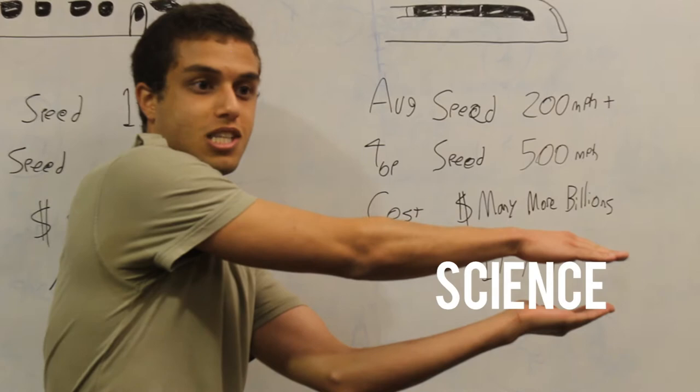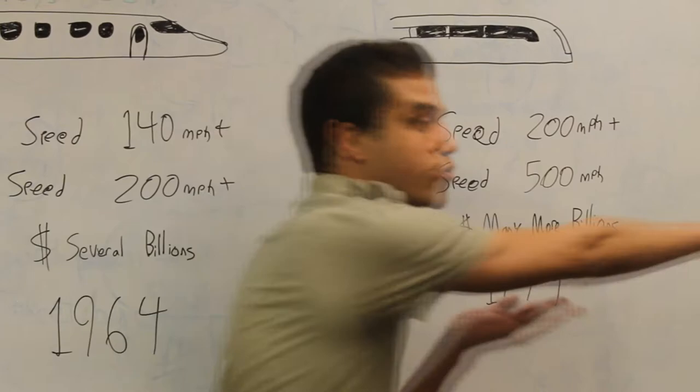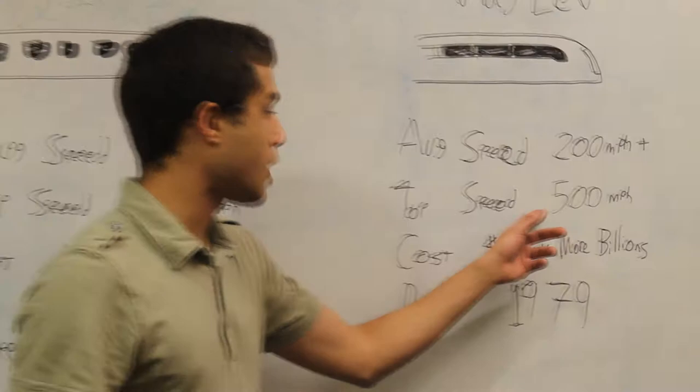These trains actually magnetically levitate, so that there is no resistance between the rails and the trains. And once electricity flows through them, the train moves forward. Given that, they have a higher average speed and top speed.